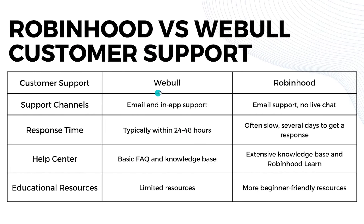For customer support channels, Webull offers email and in-app support, while Robinhood only offers email support with no live chat. For response time, Webull typically responds within 24 to 48 hours, while Robinhood is often slow and can take several days. For the help center, Webull has basic FAQs and a knowledge base, while Robinhood has an extensive knowledge base and Robinhood Learn.